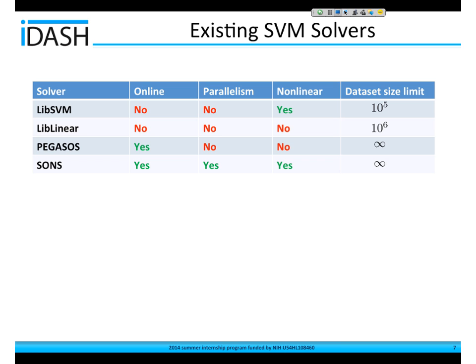When using LibLinear and Pegasus, we are assuming the data is linearly separable. In this project, we would like to propose the SUN solver to address these limitations.